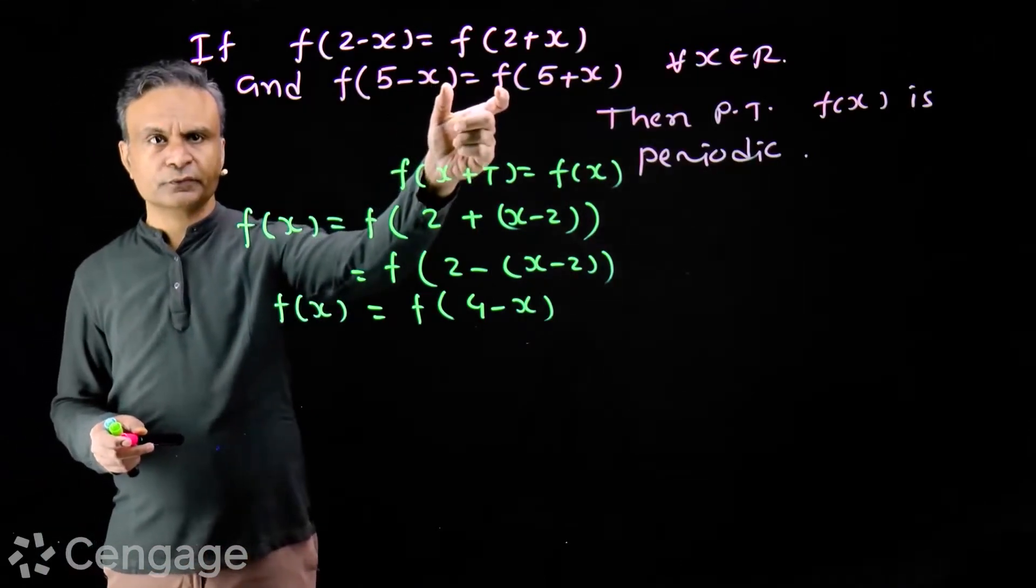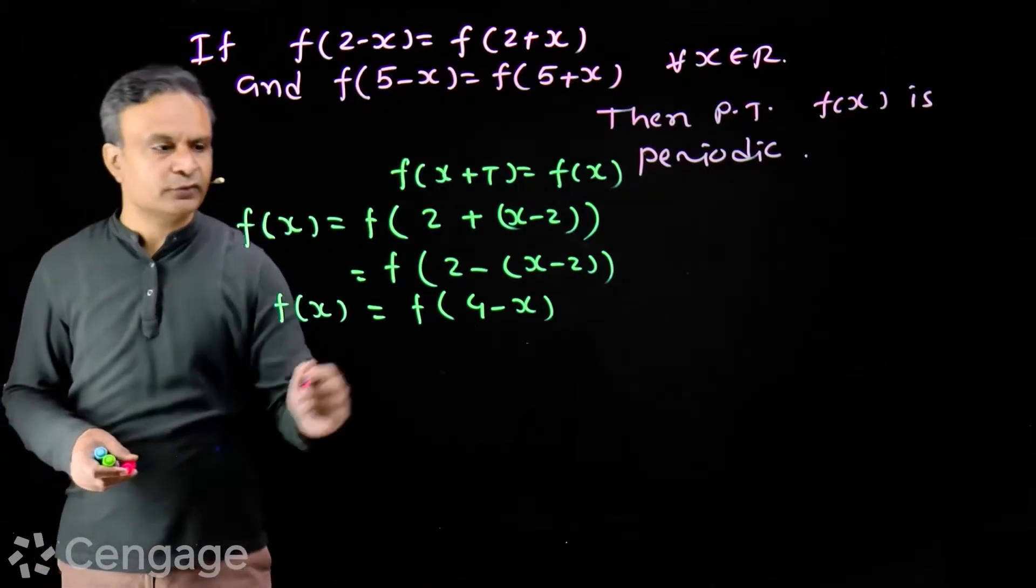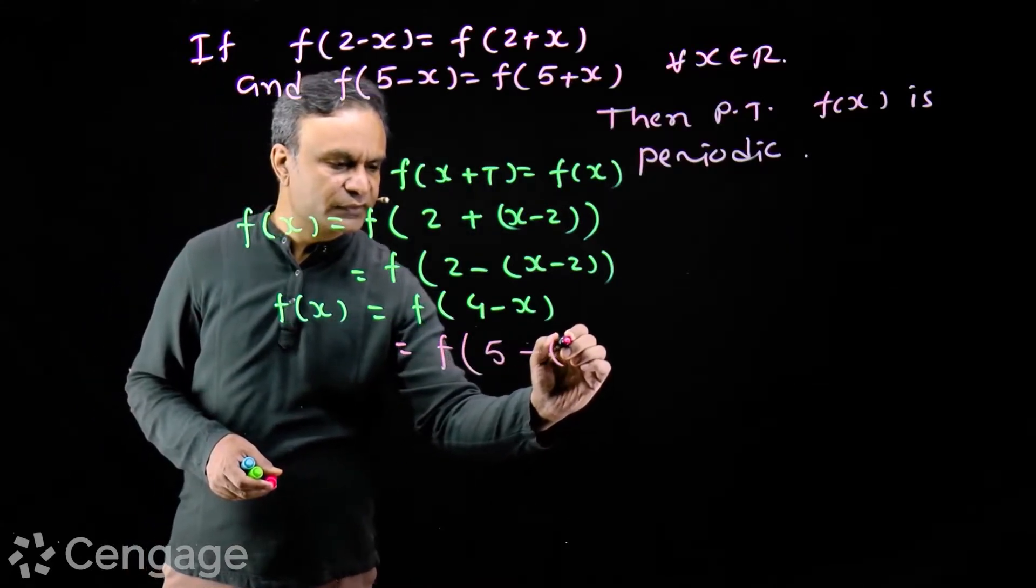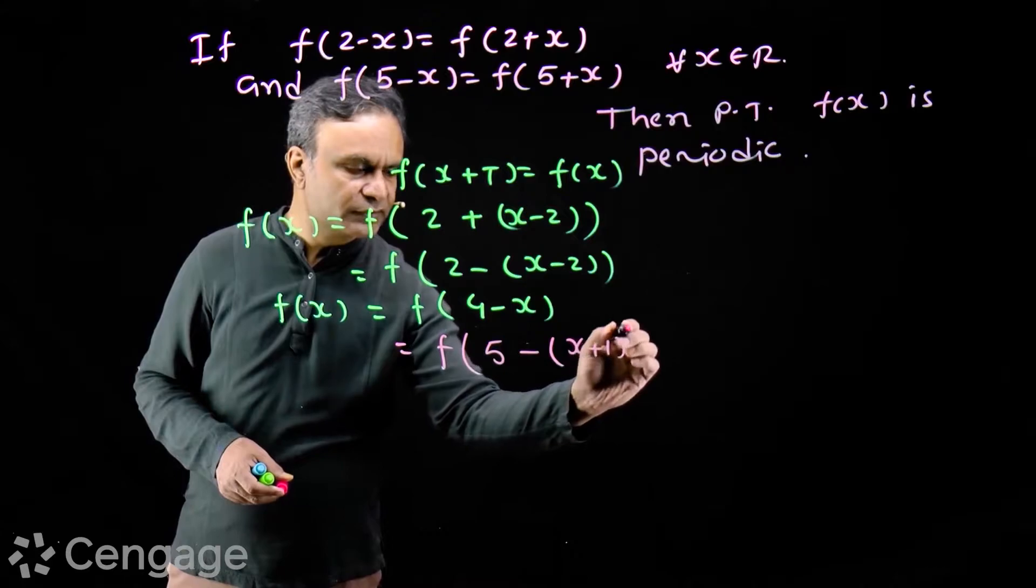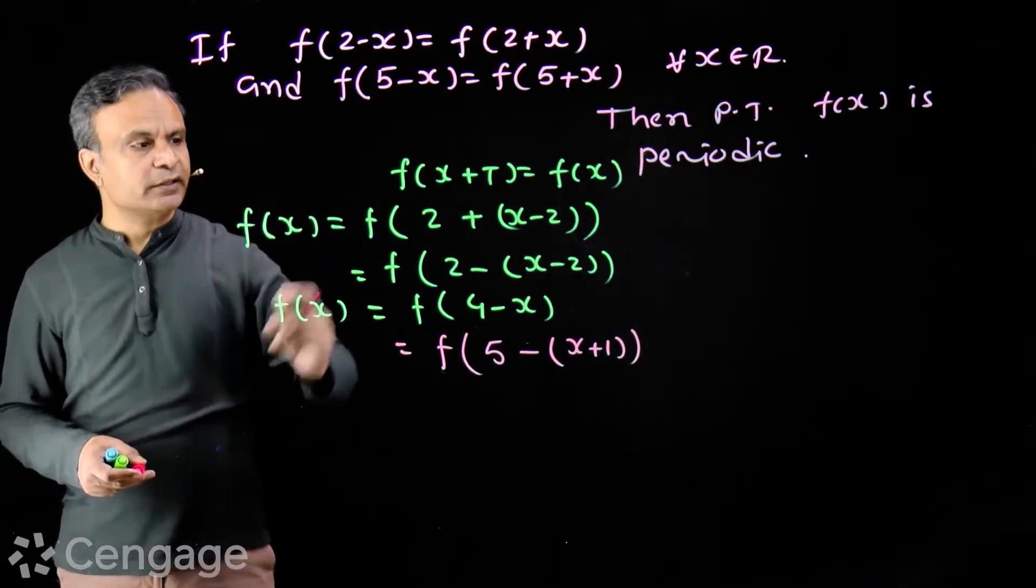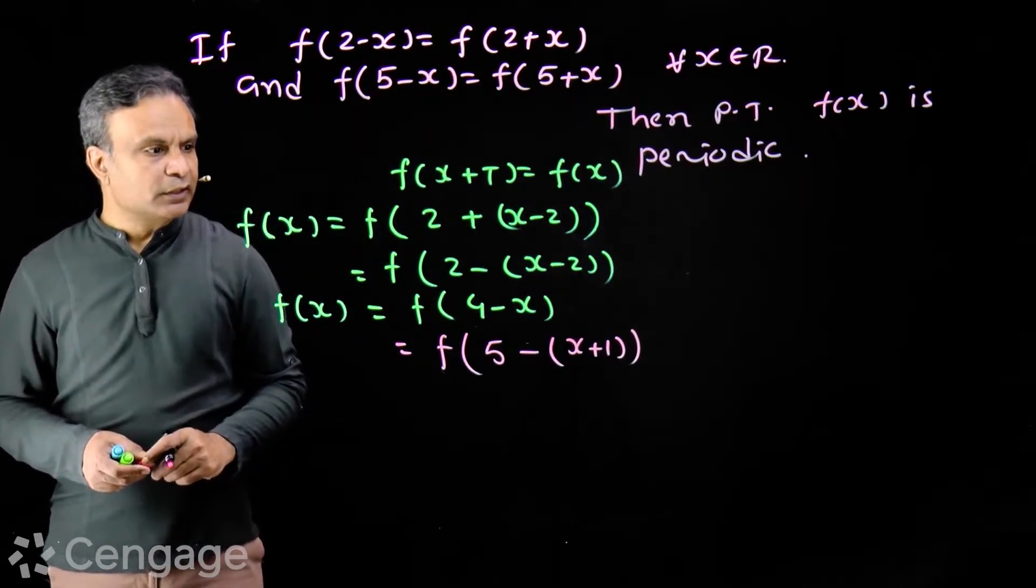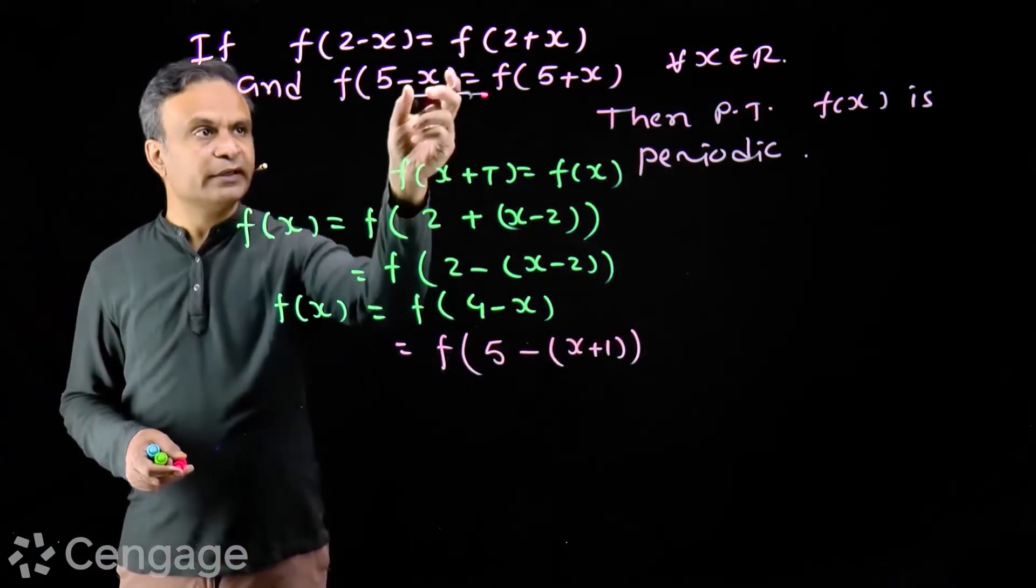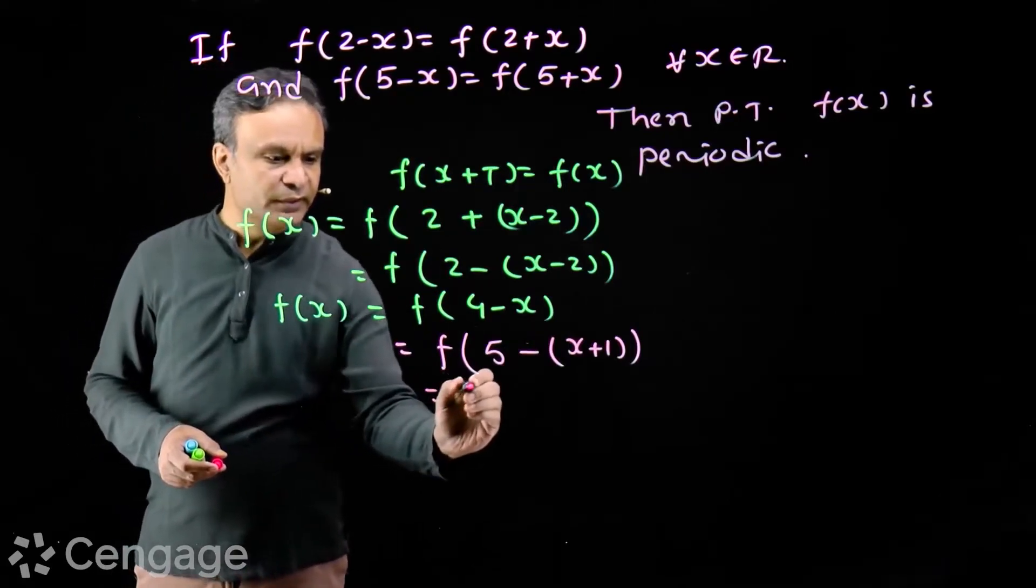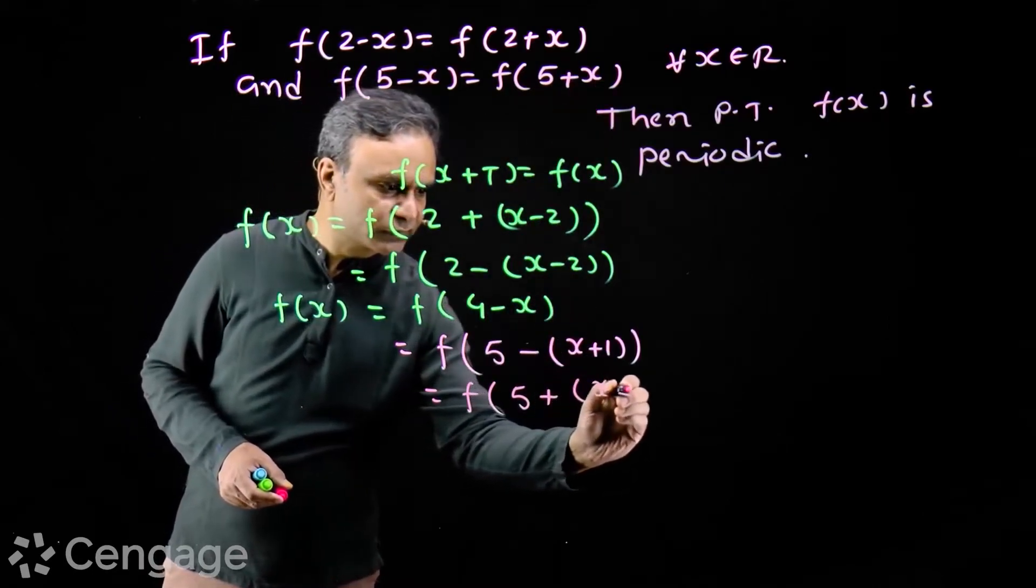This will help. Now we use this. To use this, we add and subtract 1. So we have f(5 - (x+1)). We've added and subtracted one so we can use this relation, this equation. Now here, we have x+1 in place of x. So this will be f(5 + (x+1)).